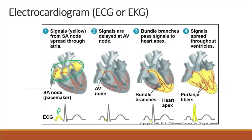After the atria contract, the impulse arrives at the AV node. The transmission of the impulse at the AV node is delayed briefly, and then the impulse spreads to the AV bundle and into the AV bundle branches, which transmit the impulse to the apex of the heart, next to the Purkinje fibers that spread throughout the walls of the ventricles. When the impulse spreads throughout the walls of the ventricles, the QRS wave is produced.